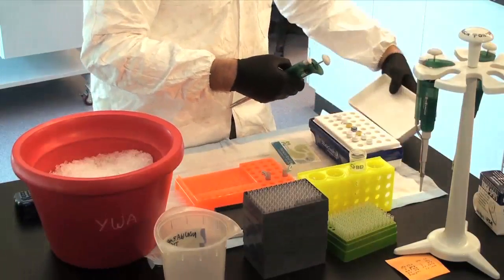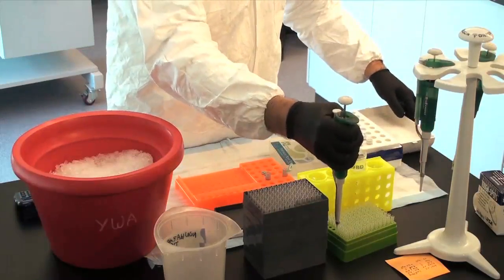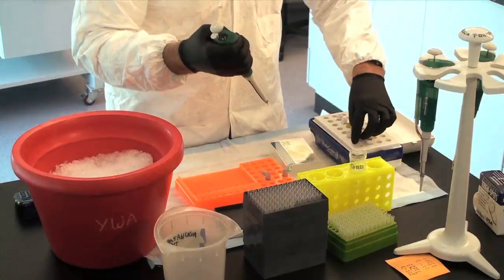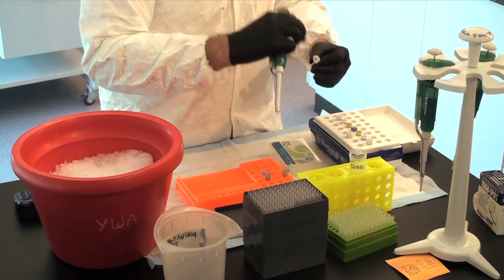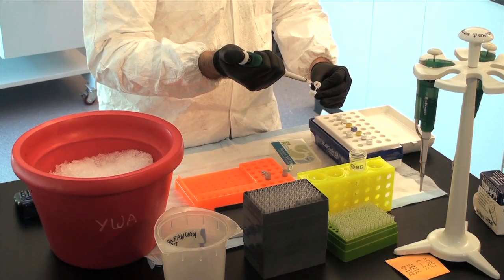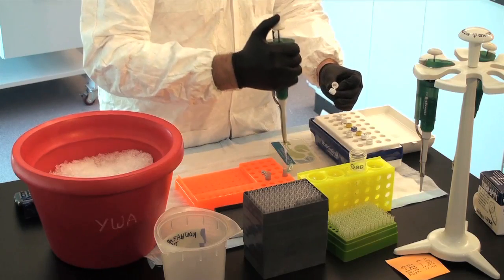Step 4: Add 4 units of each restriction enzyme. One unit is defined as the amount of enzyme necessary to digest 1 microgram of DNA in 1 hour. For this reaction, we will digest 2 micrograms in 1 half hour.